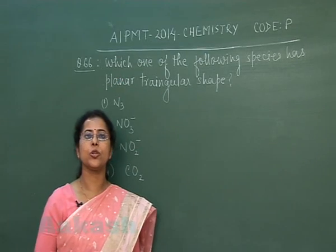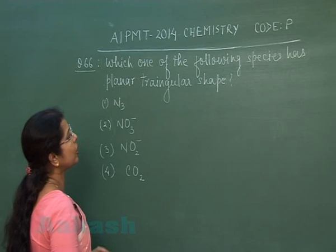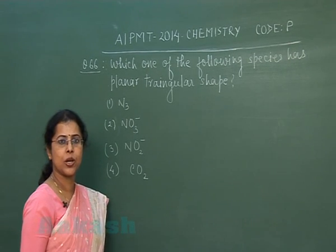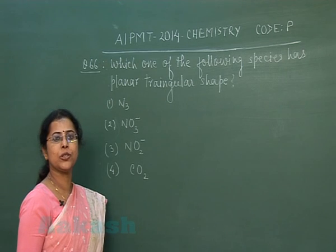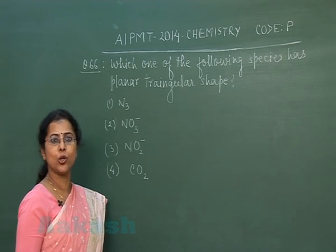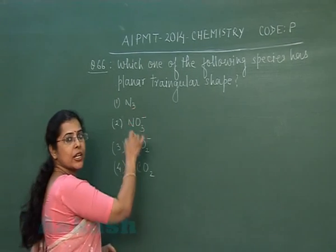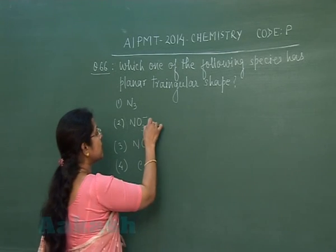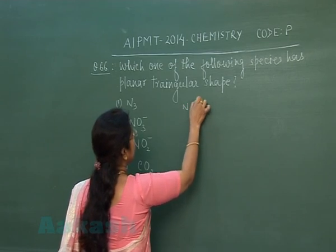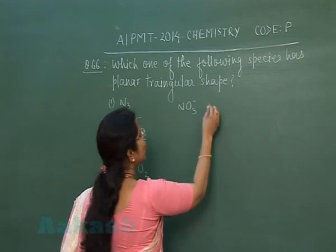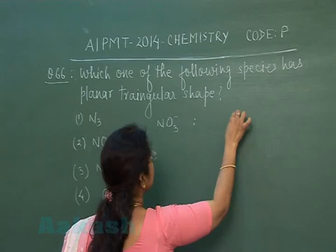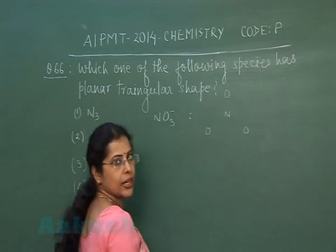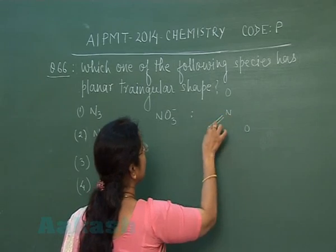Question number 66: Which one of the following species has planar triangular shape? The shape of a molecule depends upon bond pairs and lone pairs. In the case of nitrate ion (NO₃⁻), if we draw the structure, the central atom nitrogen is surrounded by three oxygen atoms.